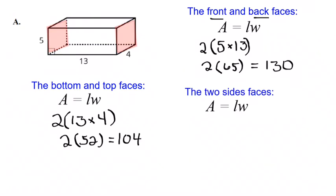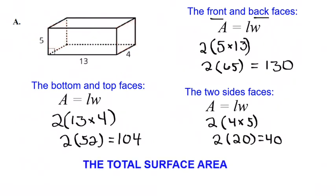The last two rectangles would be the side ones, and then that would be all six sides. So there are also rectangles. Those ones are 5 by 4 rectangles. So the 5 by 4 is 20, two of those is 40. Total surface area, when you add all that up, would be 274 units squared.